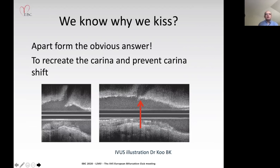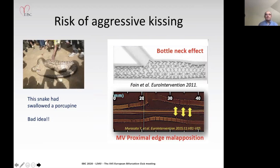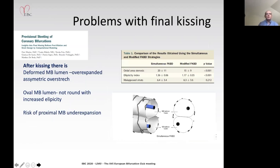Why do we kiss? Everyone knows we're trying to recreate the carina and prevent carina shift. The mechanism of carina shift is elegantly demonstrated by Dr. Koo's intravascular ultrasound image—by kissing we recreate the carina. However, if we do that too aggressively, we can generate the bottleneck effect illustrated by Nick Foyne and get main vessel proximal edge malapposition, as seen in OCT by Professor Morisato. With final kissing, we risk deforming the main branch lumen with overexpanded asymmetric overstretch. The main branch lumen may be oval rather than round, with a risk of proximal main branch under-expansion—all of which we wish to avoid.